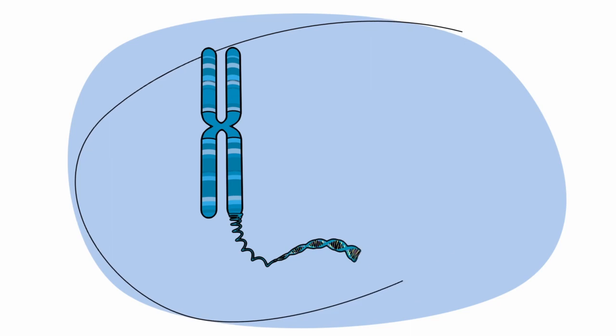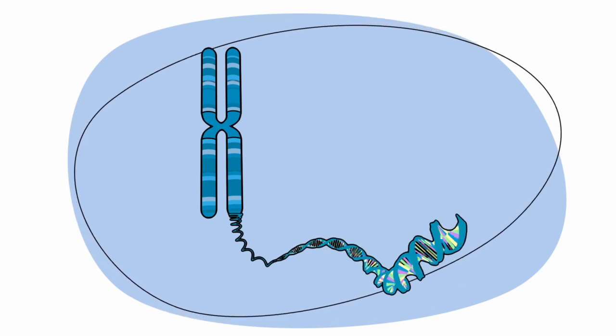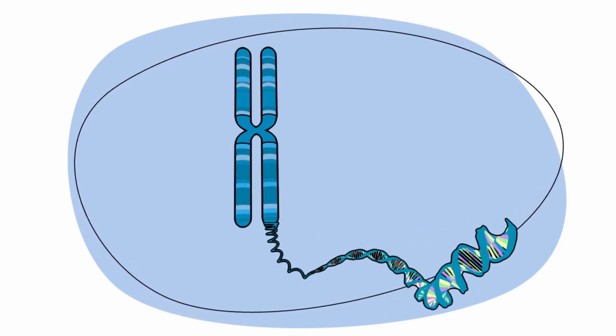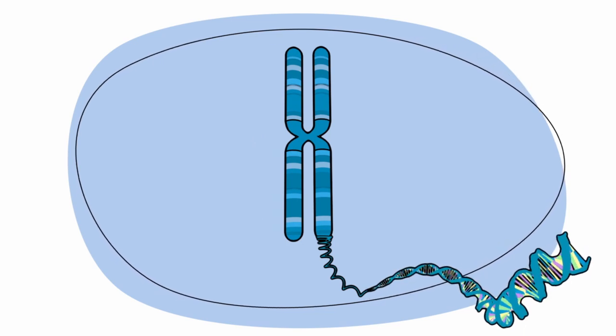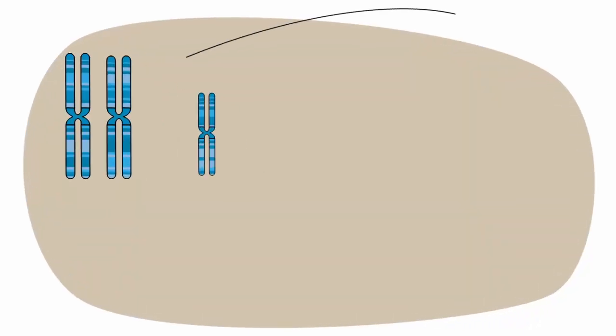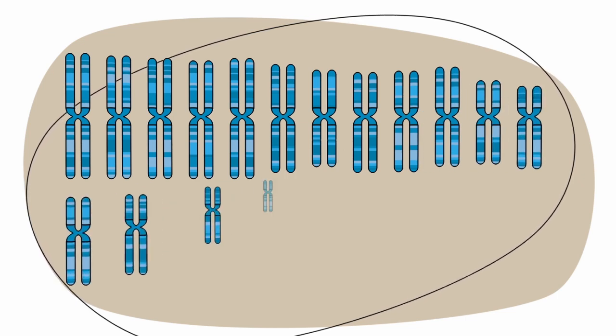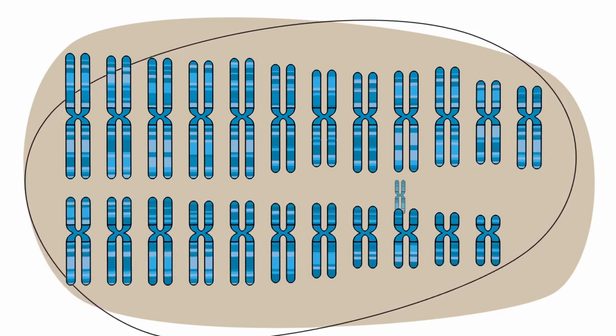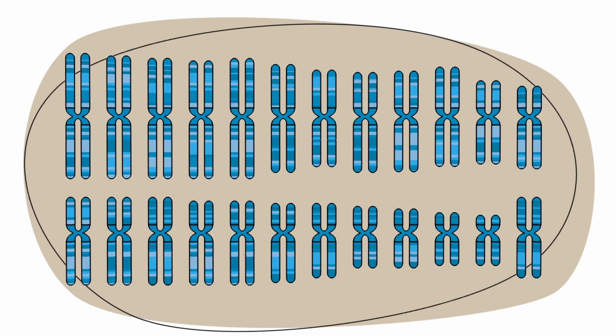DNA is organized into tightly coiled thread-like bundles called chromosomes that contain thousands of genes. We have 23 pairs of chromosomes, each different in their length, shape, and the number and type of genes they carry.